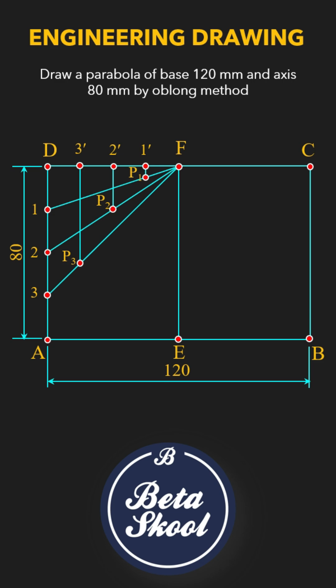Since the parabola is symmetric about the axis, obtain points P1', P2', and P3' on the opposite side by drawing horizontal lines through P1, P2, and P3.